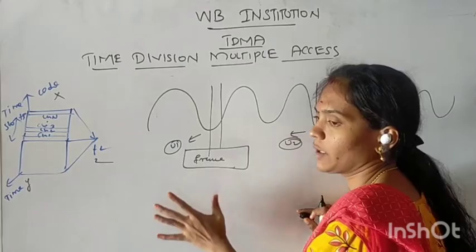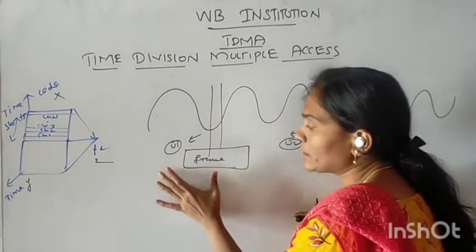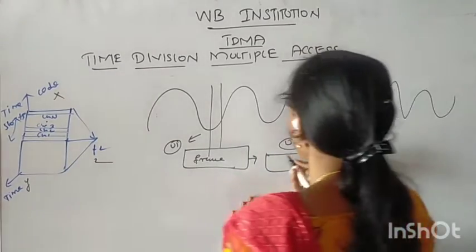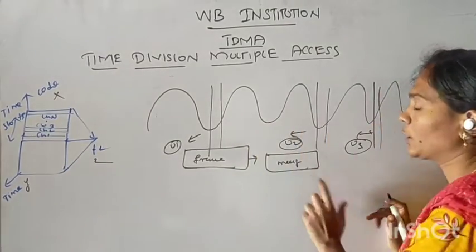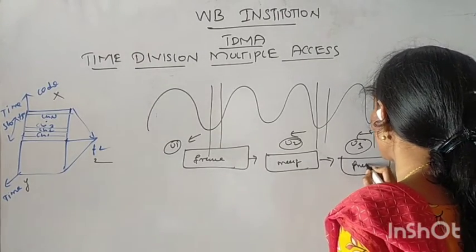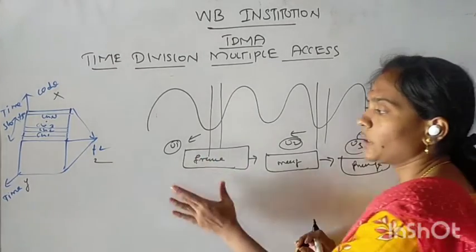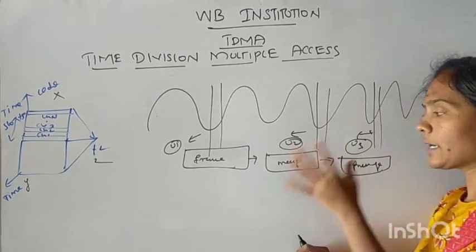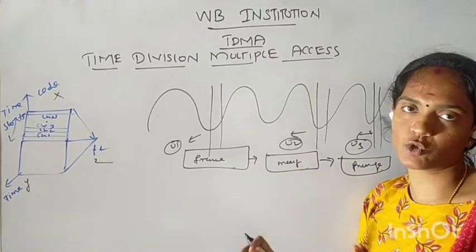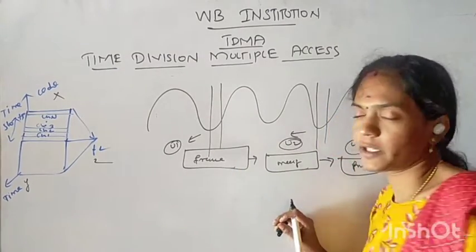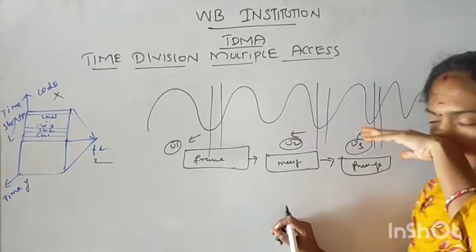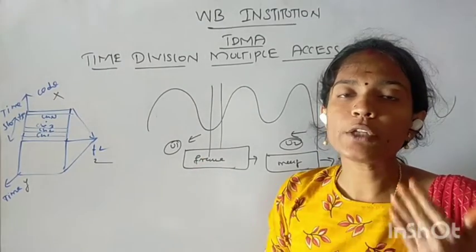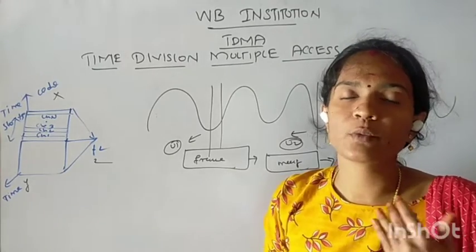Use the time slots. Time slots are divided. So that time slot we can use for user 1, user 2, and so on. So the message frame for user 2, and then user 3. Each user occupies the time slot cyclically. All users are allocated the same set of frequencies but different time periods.